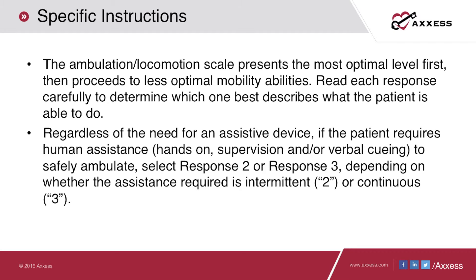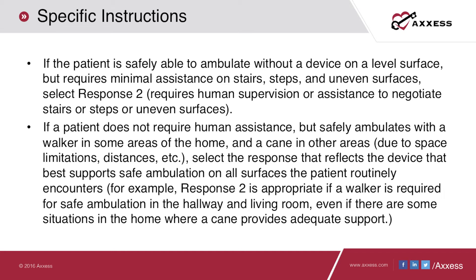Response number two is appropriate if the patient requires any verbal cueing or hands-on support. Because each home environment is different, a patient may utilize a walker in one area but a cane in a different area. You should always document which device reflects the safest ambulation for your patient.